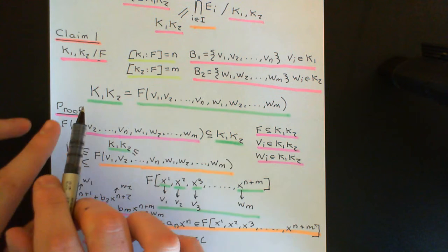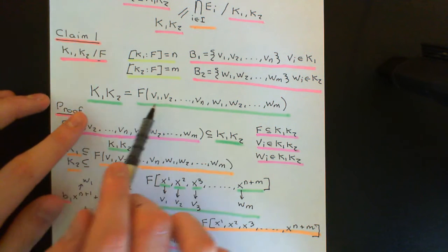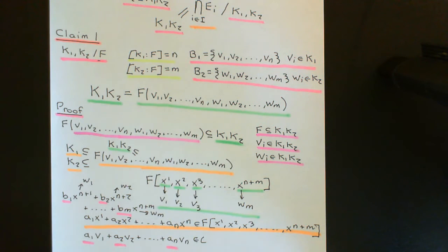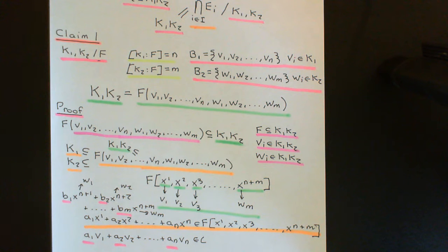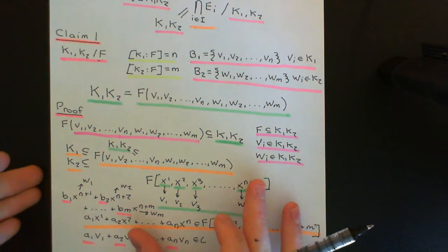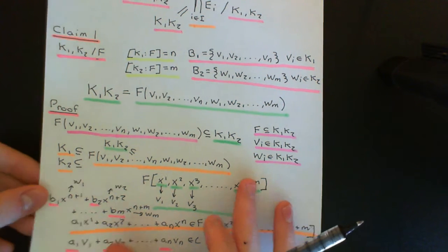We've seen that the composite of k1 and k2 is equal to the field extension of F generated by v1, v2, all the way up to vm, w1, w2, all the way up to wm. Now, let's have a look at another claim about the composite of k1 and k2 with these setup assumptions.